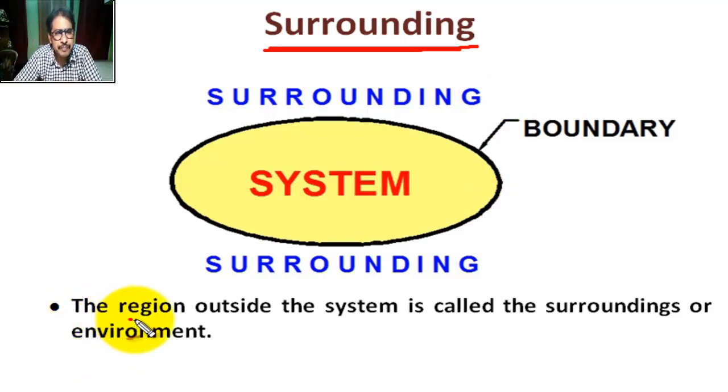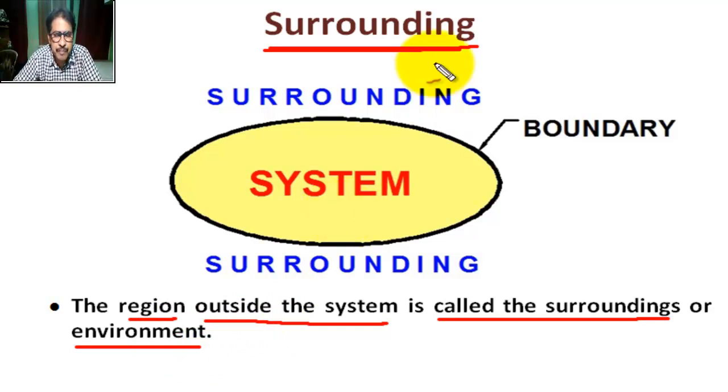The region outside the system, this is the surrounding. The surrounding, the environment, the space and matter external to a system, which is known as surrounding.